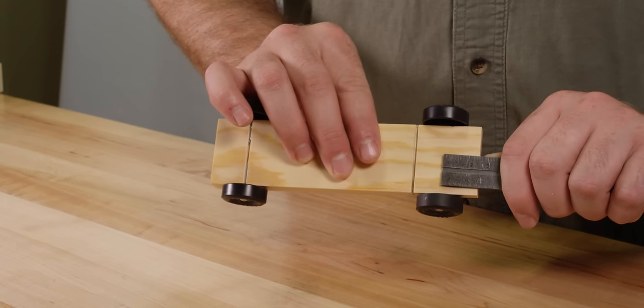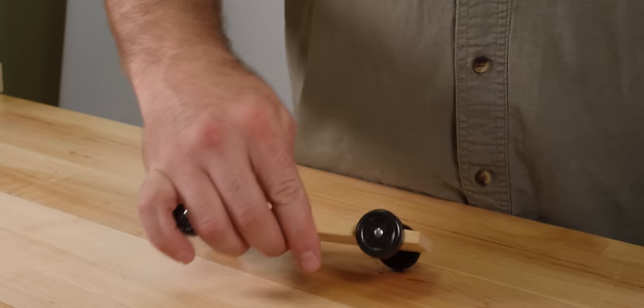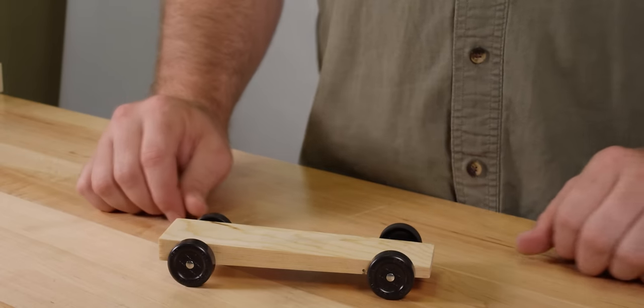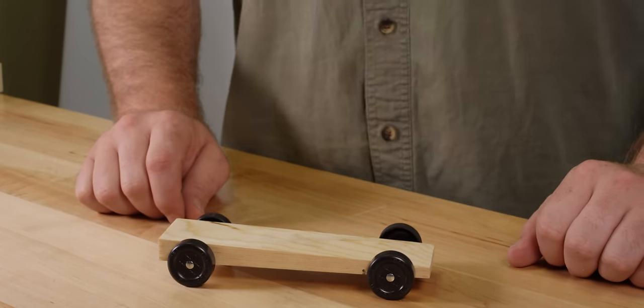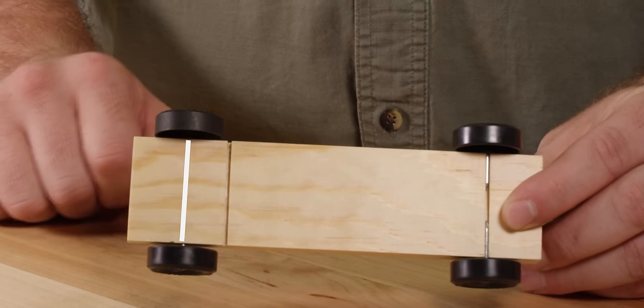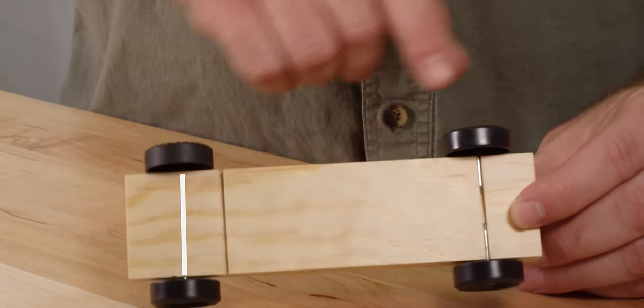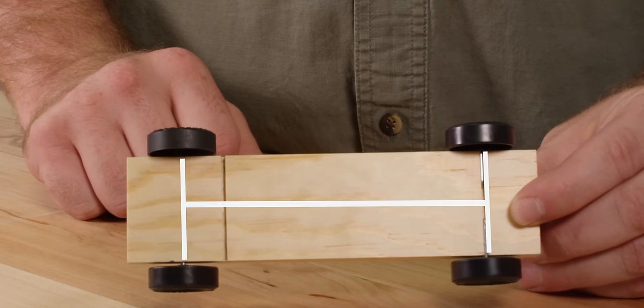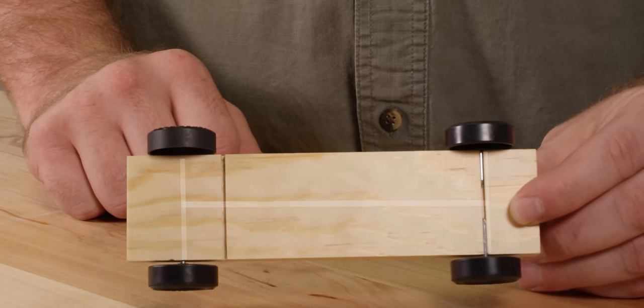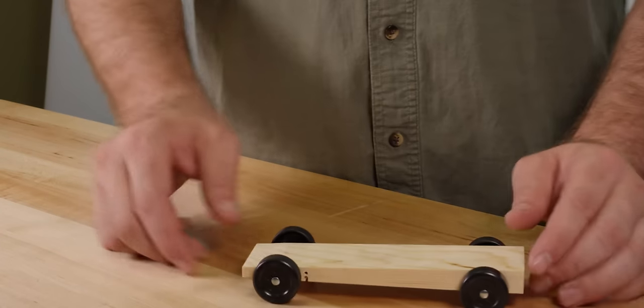Your axles and wheels are now an equal distance from the edge of the block making your car more stable. Stable cars roll smooth and straight so there's no wasted energy. Stable cars are faster.